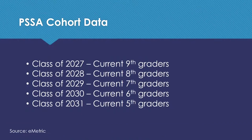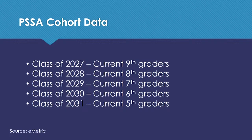The next section is the cohort data. This is when we're looking at specific classes — the 2027 class, which is the current ninth grade, through the 2031 class, which is the current fifth graders. I look at this a little differently than the proficiency on the previous slides because these are the same students we've had since the beginning. If they're listed here, that means we've had them from third grade through eighth grade data — the same students throughout their career here.